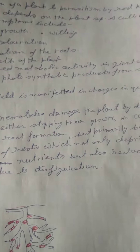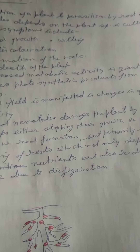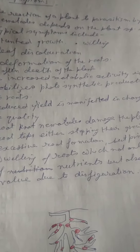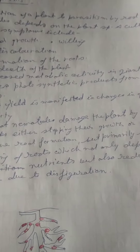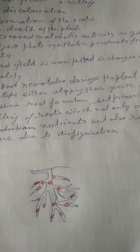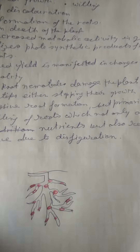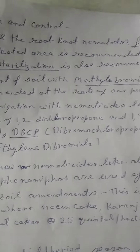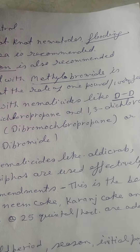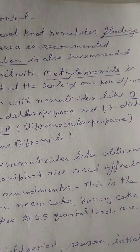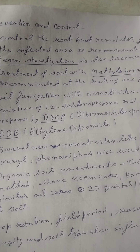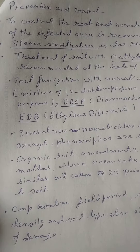Root knot nematodes also damage the plant's growth and stop the plant growth. Root formation is excessive, with swelling of the root, and the root is disfigured.